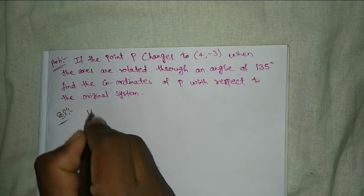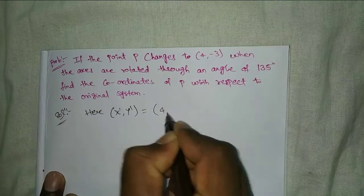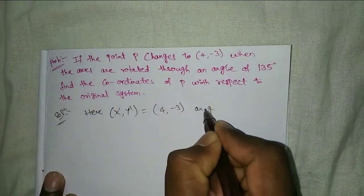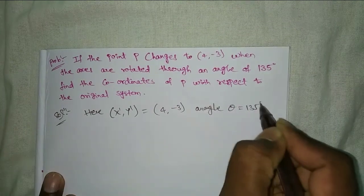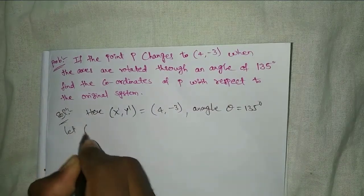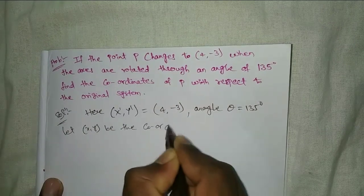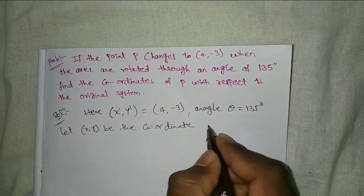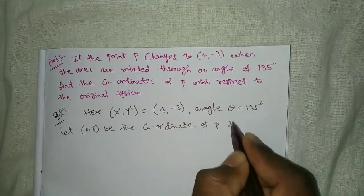Solution: x dash, y dash equal to 4 comma minus 3. Angle theta equal to 135 degrees. Let x comma y be the coordinate of P with respect to the original system. Then,